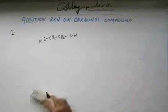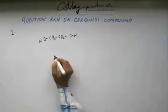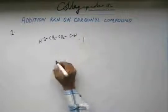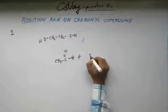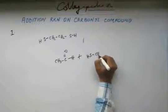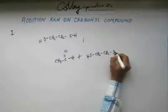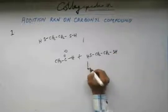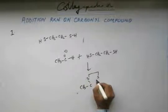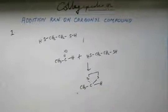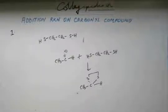So when you replace oxygen by sulphur in acetyl, it becomes thioacetyl. If you have an aldehyde — suppose we have ethanol and we are adding thioethylene glycol — then this will give us a thioacetyl. The mechanism will be the same, without change of an iota. As we have seen in case of acetyl formation, the mechanism for thioacetyl formation will be exactly the same. So there is no problem drawing this thioacetyl.